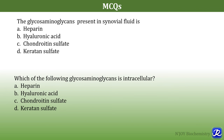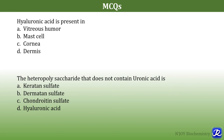Let us quickly see some important MCQs. Which glycosaminoglycan is present in synovial fluid — heparin, hyaluronic acid, chondroitin sulfate or keratan sulfate? The answer is hyaluronic acid. Which glycosaminoglycan is intracellular — heparin, hyaluronic acid, chondroitin sulfate or keratan sulfate? The answer is heparin. Hyaluronic acid is present in vitreous humor, mast cell, cornea or dermis? It is present in vitreous humor. Which heteropolysaccharide does not contain uronic acid — keratan sulfate, dermatan sulfate, chondroitin sulfate or hyaluronic acid? The answer is keratan sulfate.